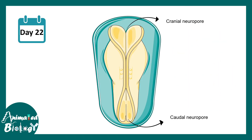At around day 22, one can clearly see the middle portion of this sheet is actually closed and formed a tube, but both ends of this particular sheet are not closed properly yet. These are known as the cranial neuropore and the caudal neuropore.